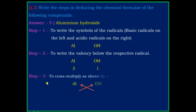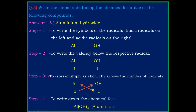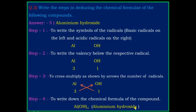Step 3: cross multiply as shown by the arrow — cross multiply 3 with OH and 1 with aluminium. Step 4: write down the chemical formula. The chemical formula of the aluminium compound is Al(OH)₃ — aluminium hydroxide.